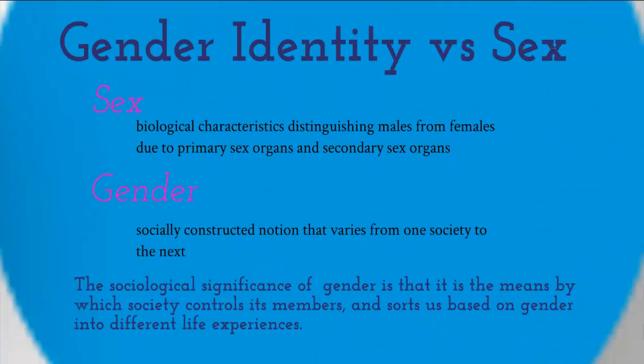Gender identity versus sex. Sex refers to biological characteristics distinguishing males from females due to primary and secondary sex characteristics. Whereas gender is a socially constructed notion that varies from one society to the next. The sociological and psychological significance of gender is that it is the means by which society tends to control its members and sorts us, based on our gender identities, into different life experiences and expectations.